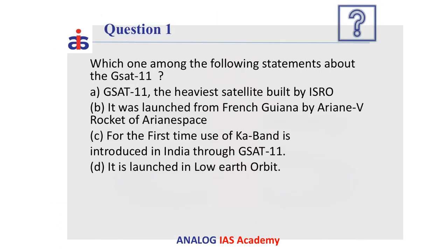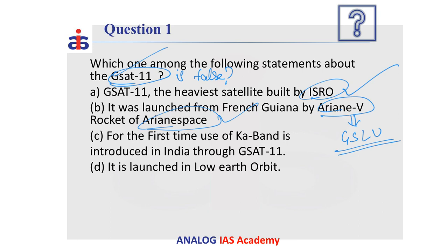With respect to GSAT-11, a satellite launched last year, consider this question: which of the following statements is false? GSAT-11 is the heaviest satellite built by ISRO — this statement is correct. It was launched from French Guiana by Ariane 5 rocket of Arianespace — also correct. GSAT-11 weighed more than 5,000 kg, well beyond the range of GSLV, which carries nearly 4,000 kg of payload to geosynchronous orbit. Since India lacked that GSLV capability, the French Guiana rocket was used.